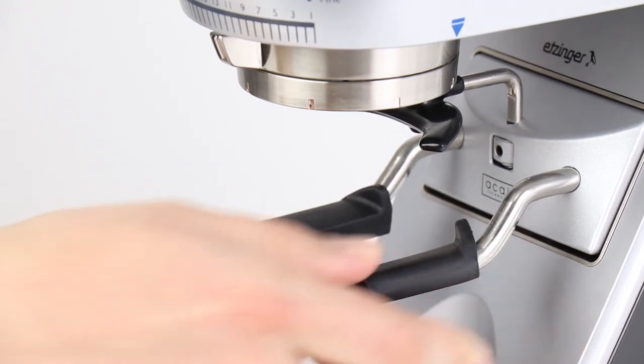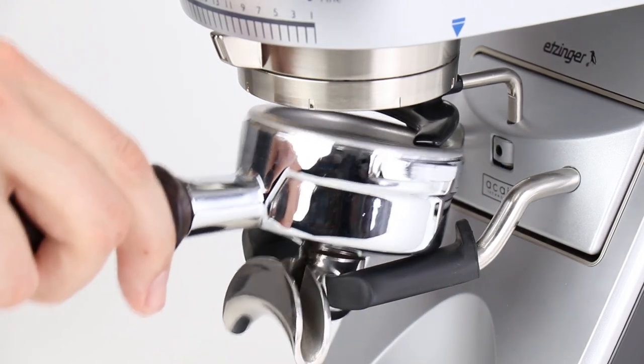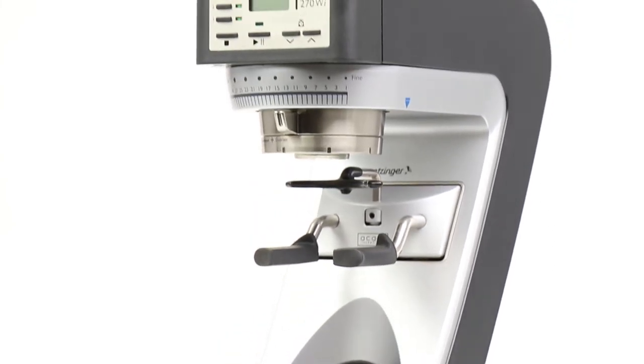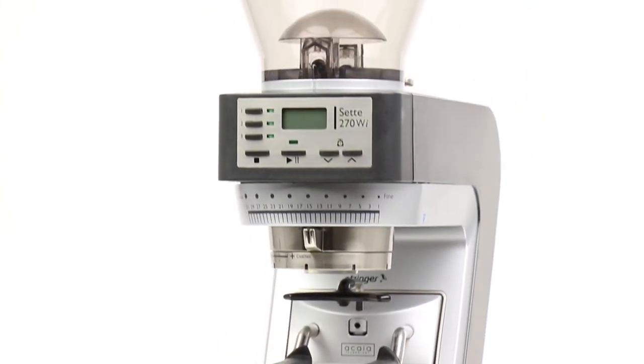This plus revolutionary grind by weight technology makes the Sette 270Wi the first home coffee grinder that grinds by weight directly into a portafilter. Enjoy repeatable, precise weight-based grinding using the Sette 270Wi.